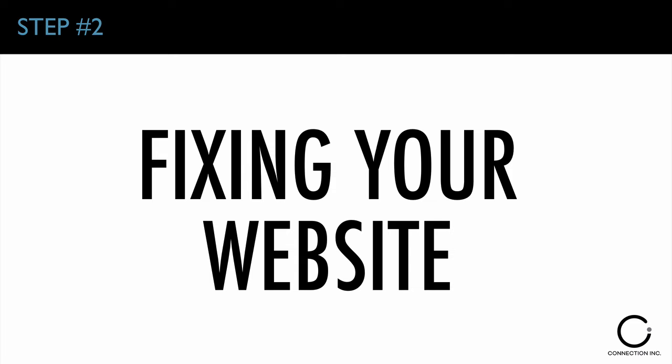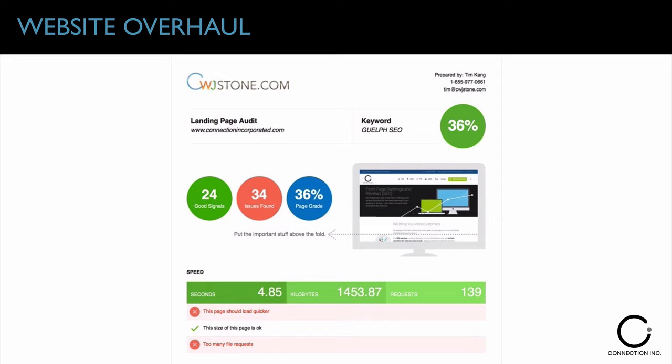You've got to get that fixed if you want to rank in the three-pack with your Google My Business page and rank organically with your website. We have a tool our team uses internally — our specialists will actually overhaul your website for you or give you a plan showing all the things that need to be fixed with a step-by-step checklist. I'm offering that to you here today for free. Stick around to the end of the video and I'll give you the link.